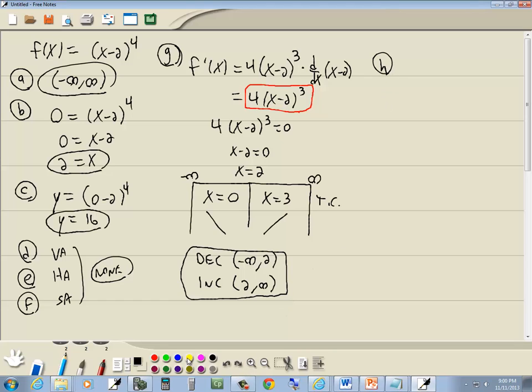Now our min and max. If you're increasing, decreasing changes, and the point exists there, then that's going to be your min or max. Well, this is decreasing changes, so this is going to be a min. So we'll have a min at 2 comma something. Well, if I come back to here, if I put 2 in here, 2 minus 2 is 0, 0 to the fourth is 0. So this would be 2, 0.